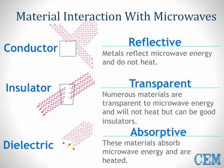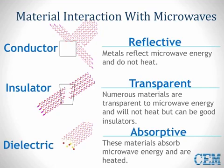When microwaves come into contact with materials, they can behave in different ways. We classify materials into three general categories. Conductor materials are metallic materials that reflect microwave energy and do not heat — think of the metal walls of a microwave oven. Insulators are materials that are transparent to microwave energy but hold the heat generated by collision energy; Teflon, glass, and quartz are good examples, which is why these are the primary materials used in our digestion vessels.